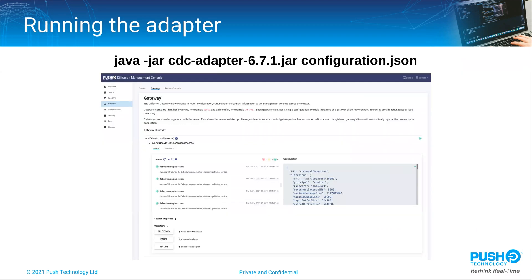Running the adapter is as simple as running a Java application such as a control client. It takes the name of a configuration file on the command line. The CDC adapter can also be monitored and controlled from the Diffusion management console. Here we can see an adapter registered and running, and we can inspect its configuration plus perform some operations such as shutting it down or pausing and resuming it. The aim is to be able to start adapters through this interface, and that's scheduled for a future release of Diffusion.